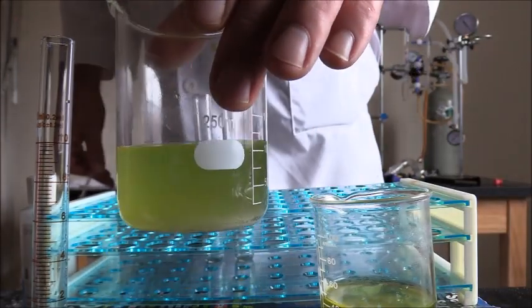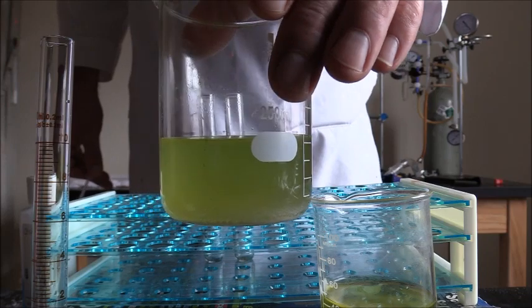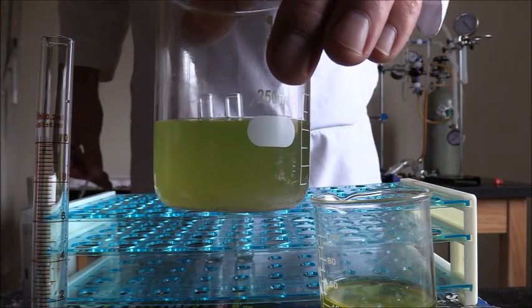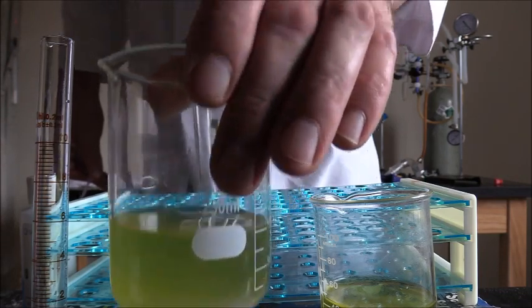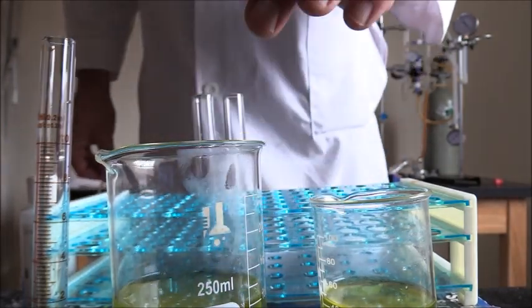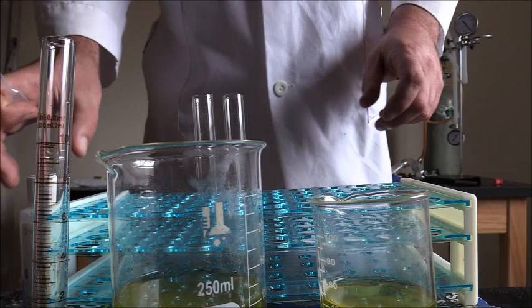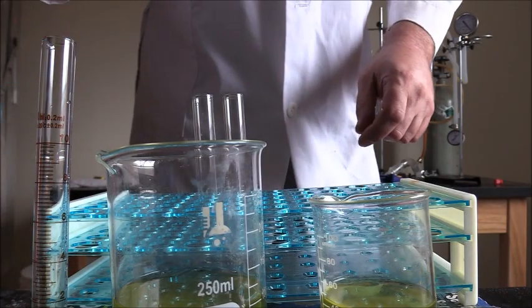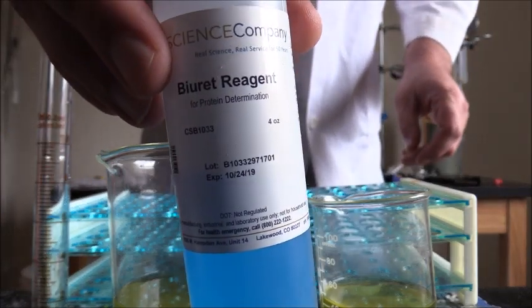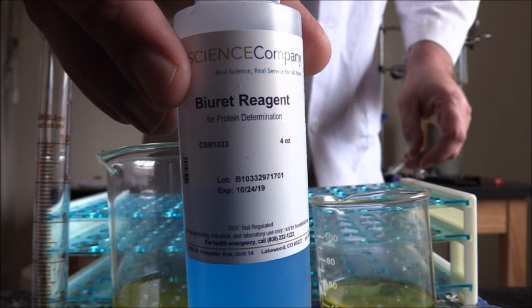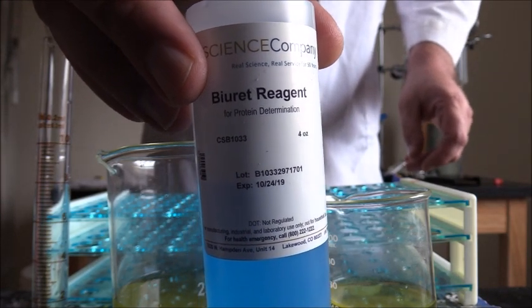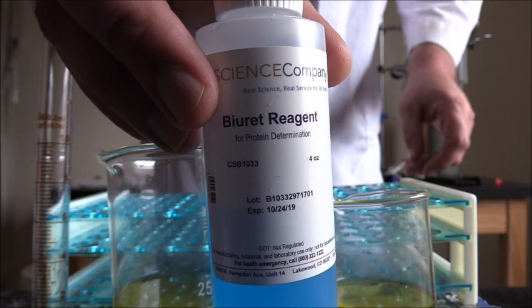And this is the experimental solution—this is the solution to which I subjected carbonyl sulfide. So we're going to test these two and we're going to see if we've created any peptides. I have biuret reagent, which is used to test for peptides. So that's how we will determine whether any peptides were produced from this experiment.